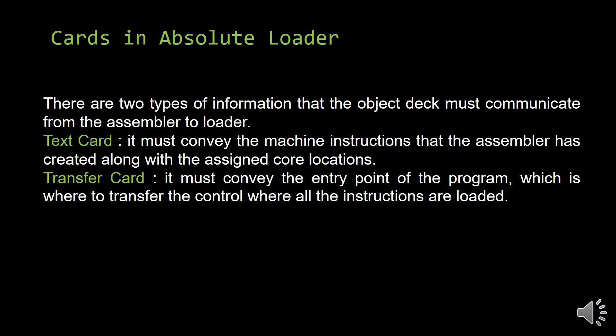What is a text card and what is a transfer card? As mentioned, the assembler performs everything. Translation is done by the assembler; relocation is also done by the assembler. So the assembler knows where that program should be loaded and at which memory location. The assembler transfers all the machine instructions along with their core location — meaning where to load that particular instruction — and that card is called a text card. In short, a text card is a card where all machine instructions along with their assigned core address or core location are provided.